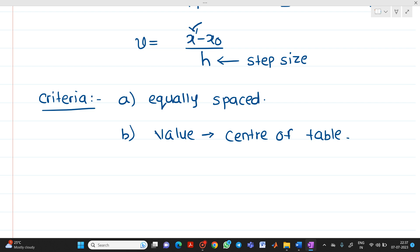The third point is that in order to get the best result we should have the value of v between 0.25 to 0.75. So, these are the three criteria which should be fulfilled before applying Bessel's interpolation formula.